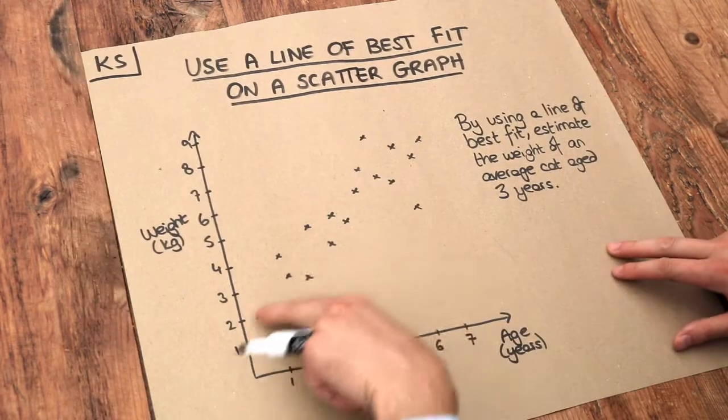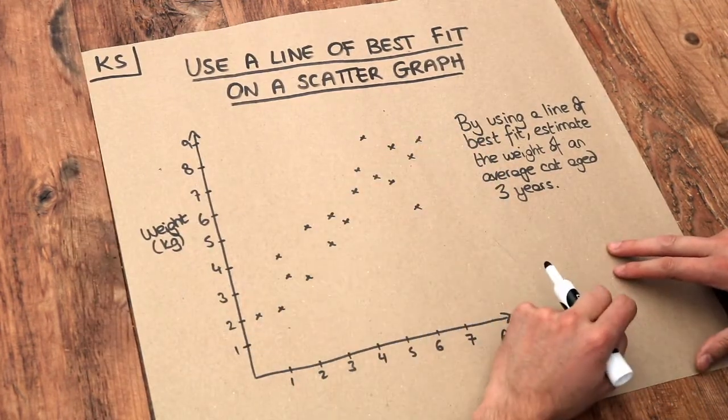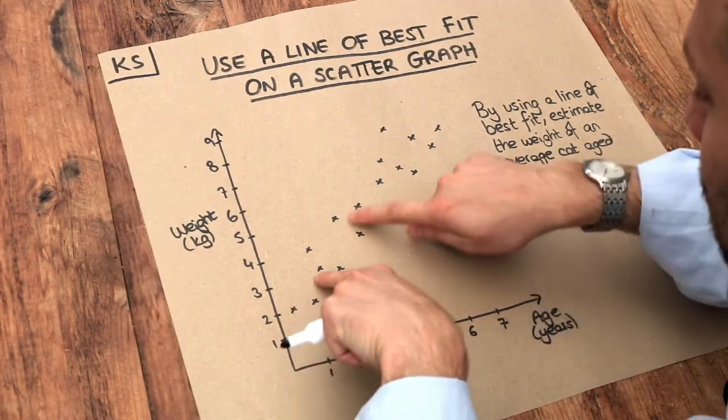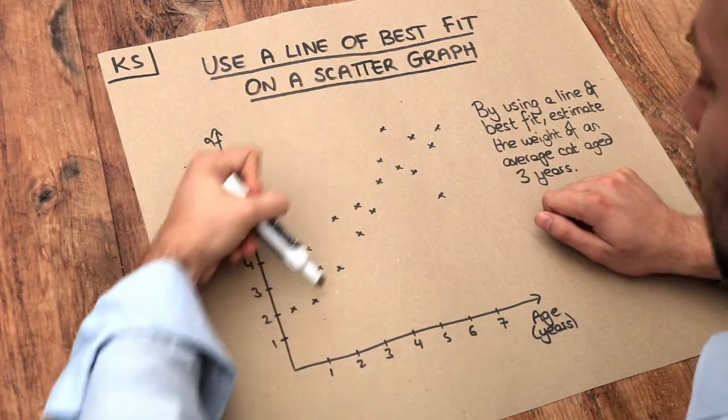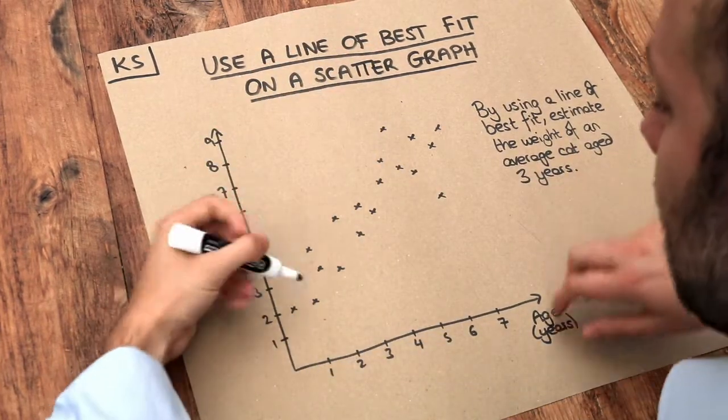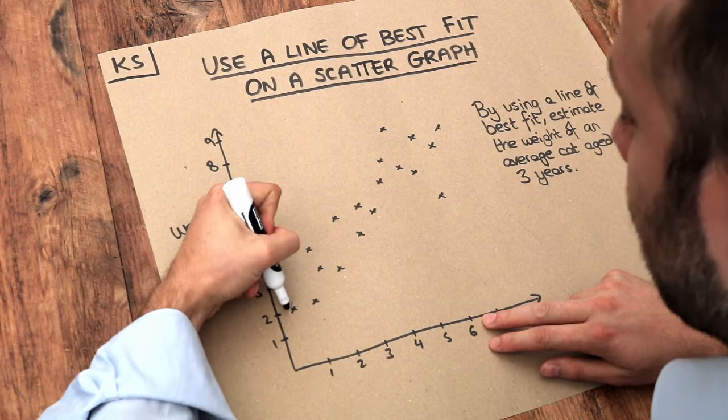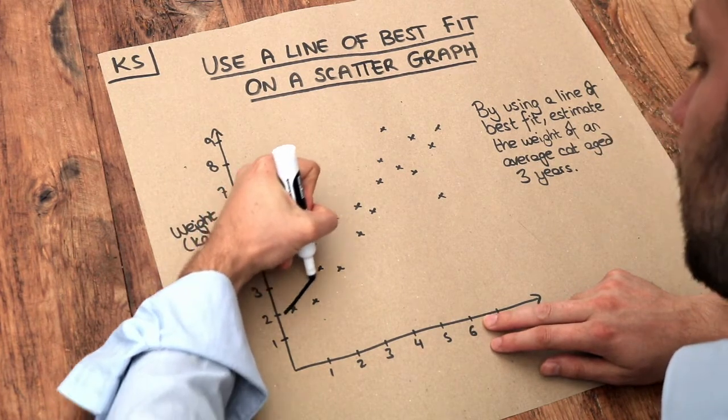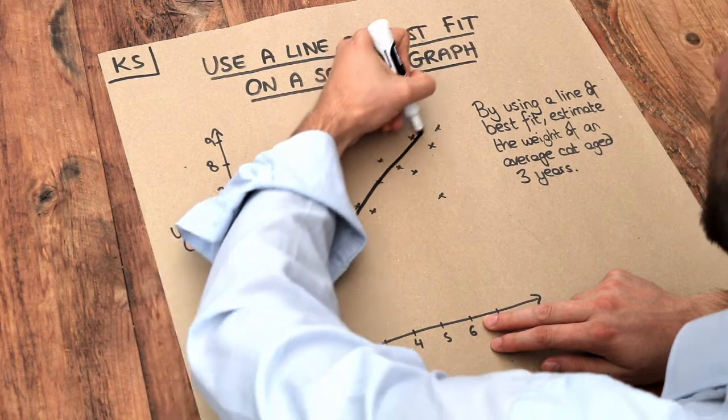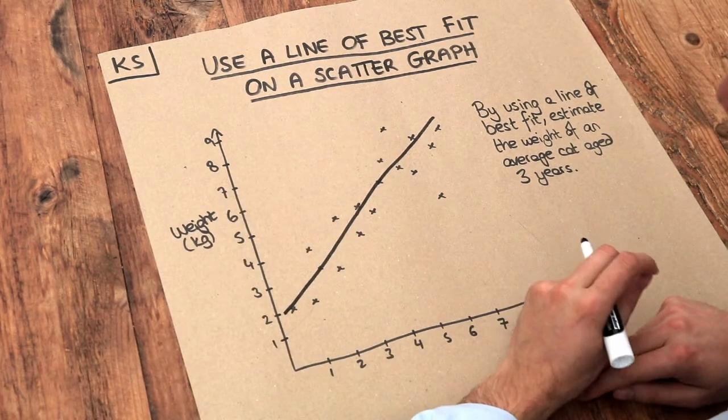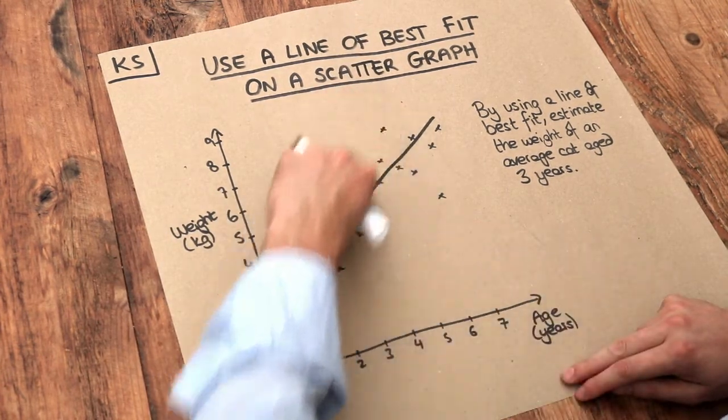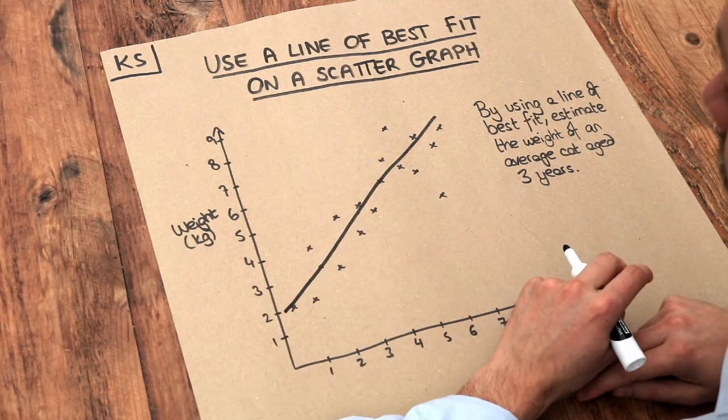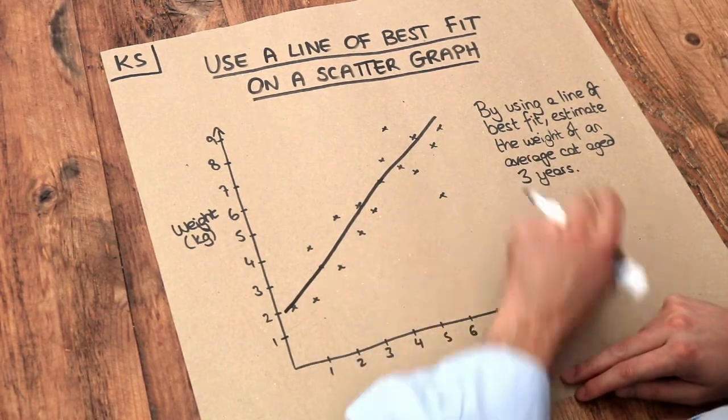Now what we can do is look at the underlying trend of this data, and can you see that these points here seem to have like a straight line as a trend? So let's try and draw a straight line with a ruler that centrally goes through these dots and try to make it so you roughly have the same number of points on each side of the line and that this is central to all your points.